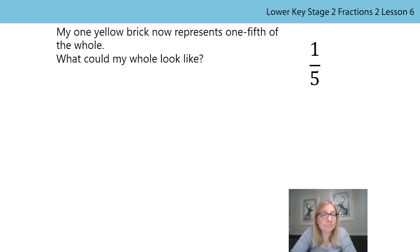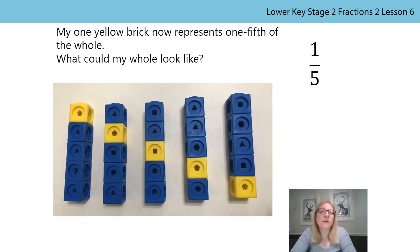How did you get on this time? We needed five bricks in total, one yellow and four blue. Because we had more bricks, there were more possible answers. Firstly, how many towers did you find? If you found five, well done, here are mine. I found that it helped me to follow a pattern, moving the yellow brick down one place each time.